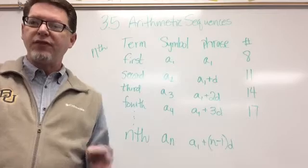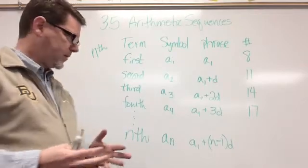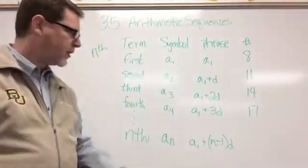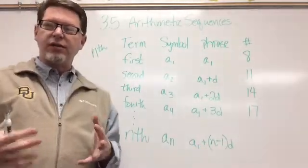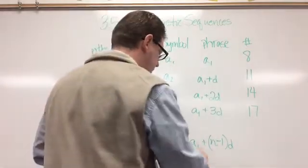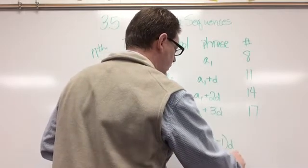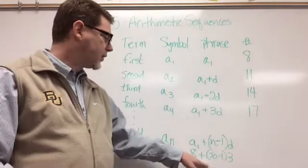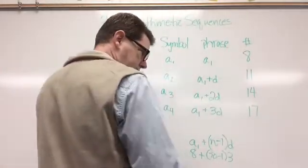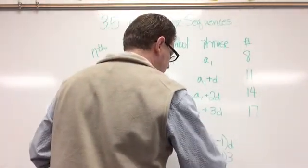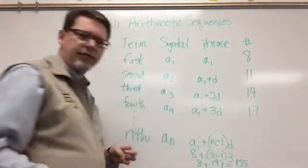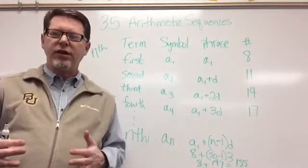Let's say I want to find the 50th term in the sequence 8, 11, 14, 17. I could add three every time, or I could use the formula. n is 50, so: a sub one is eight, plus 50 minus one times three. That's eight plus 49 times three. 49 times three is 147, and 147 plus eight — the 50th term in this sequence is 155. Quick and easy way to find the nth term.